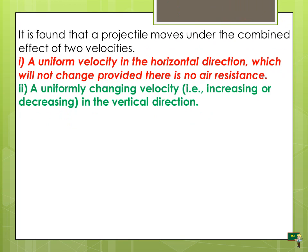A projectile moves under the combined effect of two velocities. The first is a uniform velocity in the horizontal direction, which will not change provided there is no air resistance. The second is a uniformly changing velocity — increasing or decreasing — in the vertical direction, because the vertical direction depends upon the gravitational force.